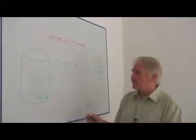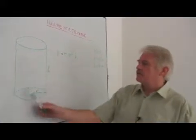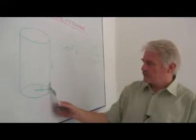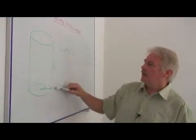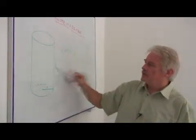First of all, what is a cylinder? A cylinder is a type of prism. It has a circular cross section and a perpendicular height, h.